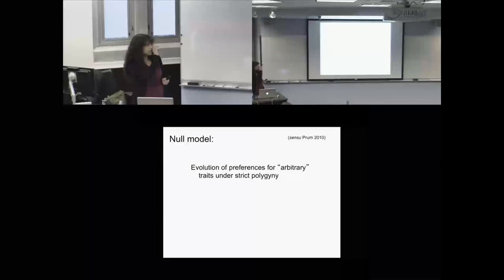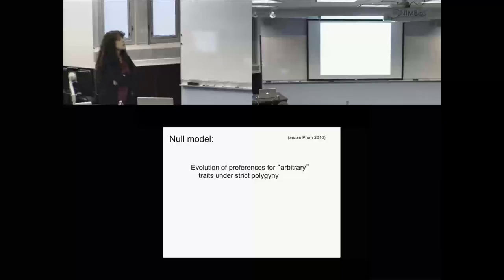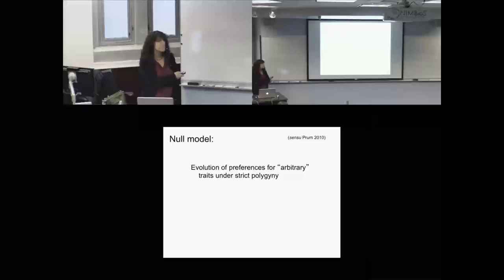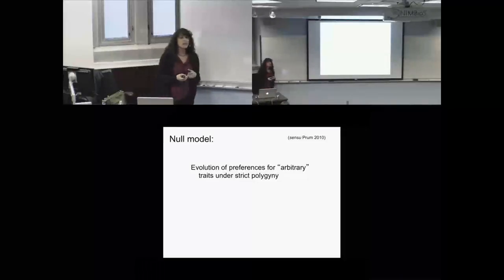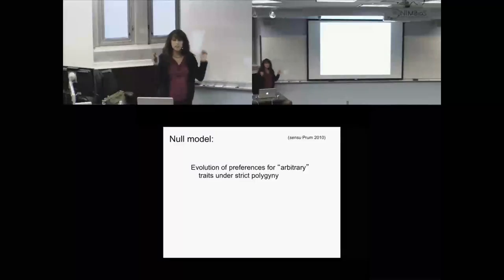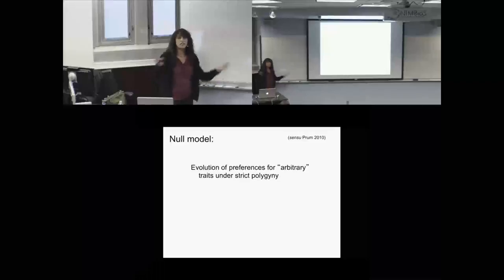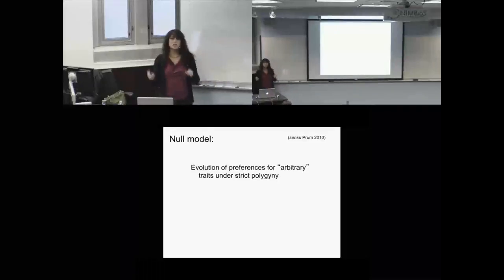The null model I'm using is in the sense that Prum used it in a very influential evolution perspective in 2010. A null model for sexual selection is what you have when you simply have a preference and a trait and see if you get subsequent evolution of the preference and the trait — elaboration of the two with no other selective forces, no other forces other than the existence of a preference and a trait. So this is evolution of preferences for arbitrary traits under strict polygyny.